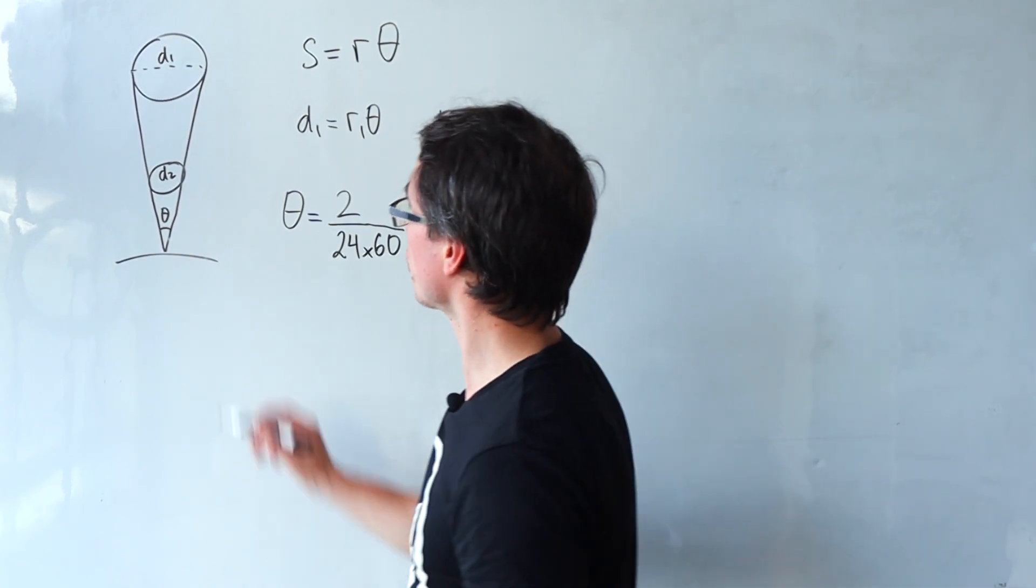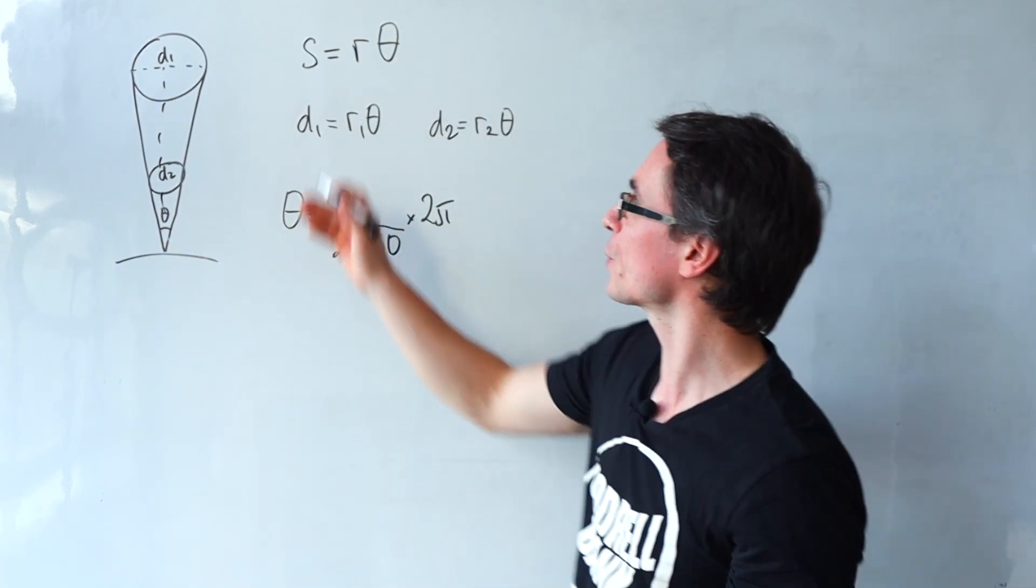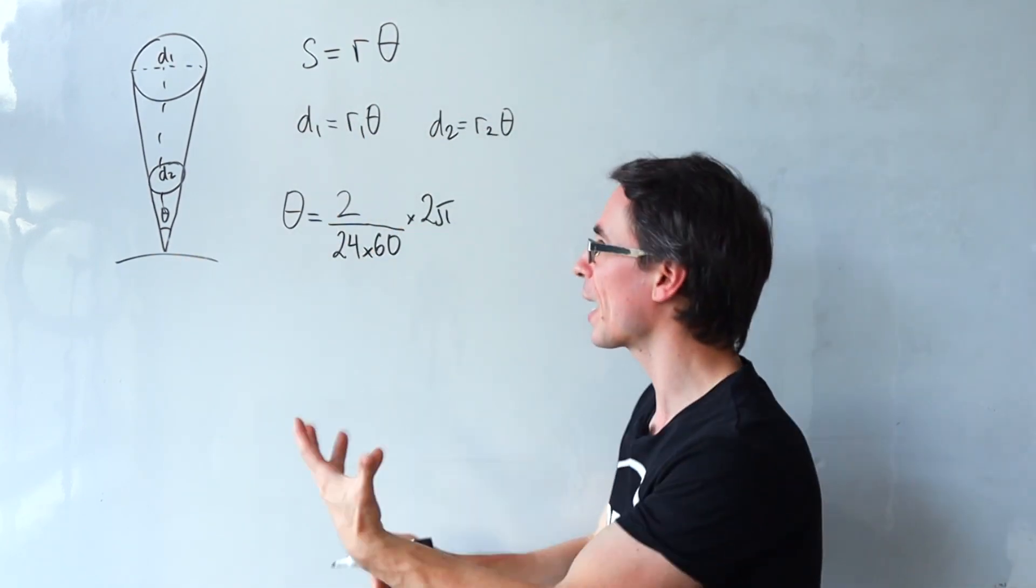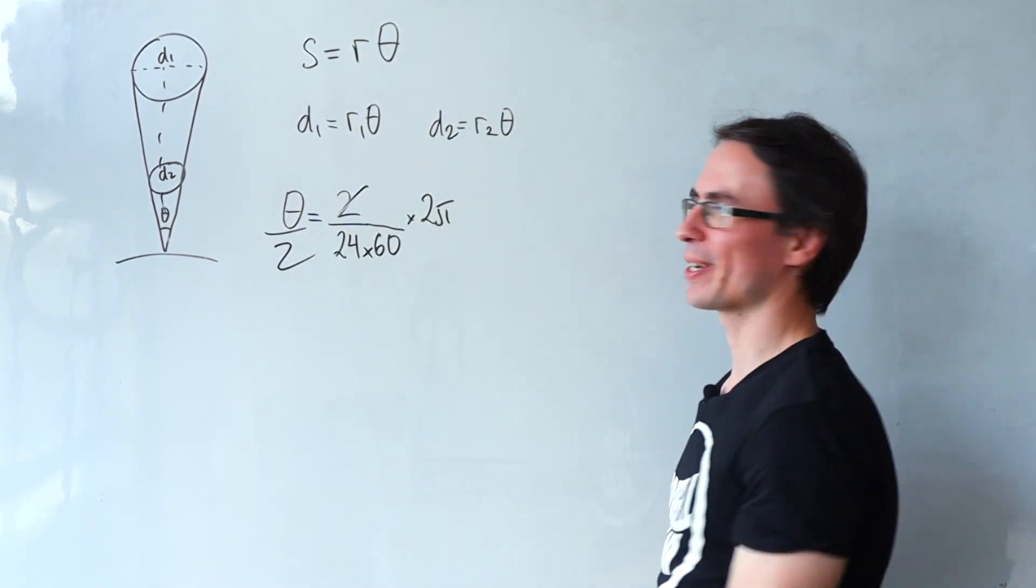So what I'm going to do is essentially half this angle because this refers to the diameter and I want the radius. In other words theta over 2 is just equal to that.